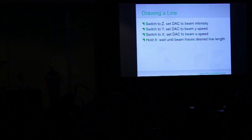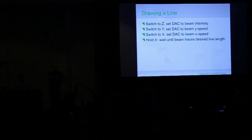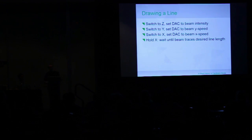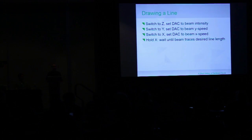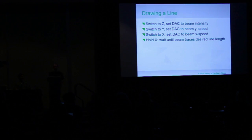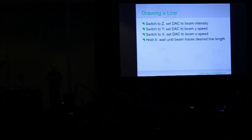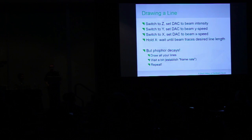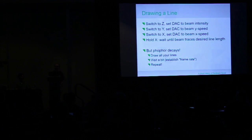In order to draw a line, you would switch to the Z channel, fill in the beam intensity register, switch to Y — now being held — set your Y speed, switch to X, set your X speed. Because there's no hold on X, the CPU basically waits until the beam traces the desired line length, and you get your line. That's all you have to work with. But phosphor decays of course, so you have to draw all your lines, wait a little bit — that's sort of your frame rate — and then repeat.